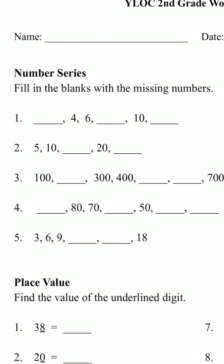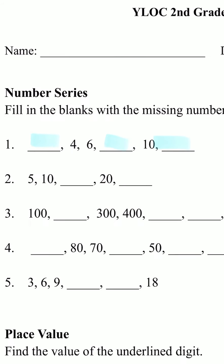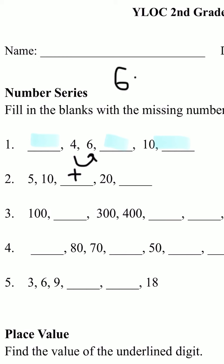Number 1, we have blank, 4, 6, blank, 10, and then blank. We're going to have to find these missing numbers by finding the pattern. To find the pattern, we have to see what we're getting bigger by. We know that we're getting bigger because 6 is bigger than 4. So we have to add something to get 6. To find that, we're going to do 6 minus 4, which would be 2. So now we found out that we're getting bigger by 2.